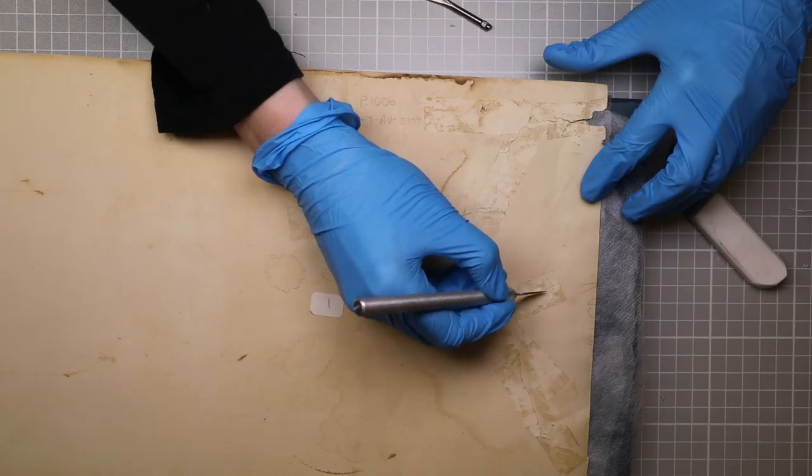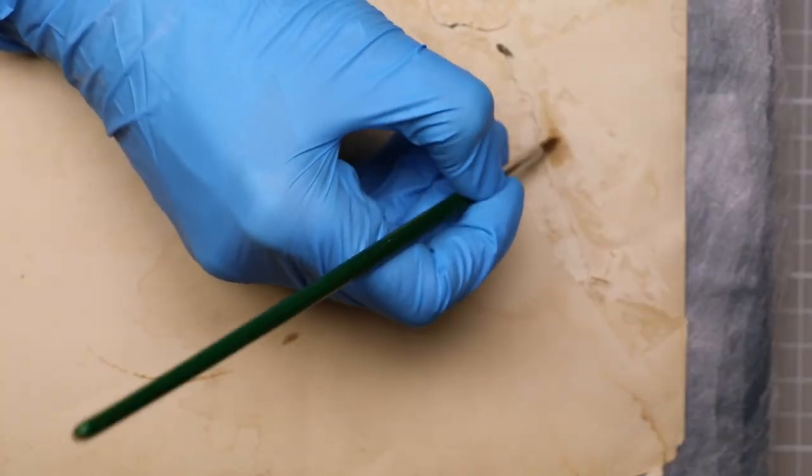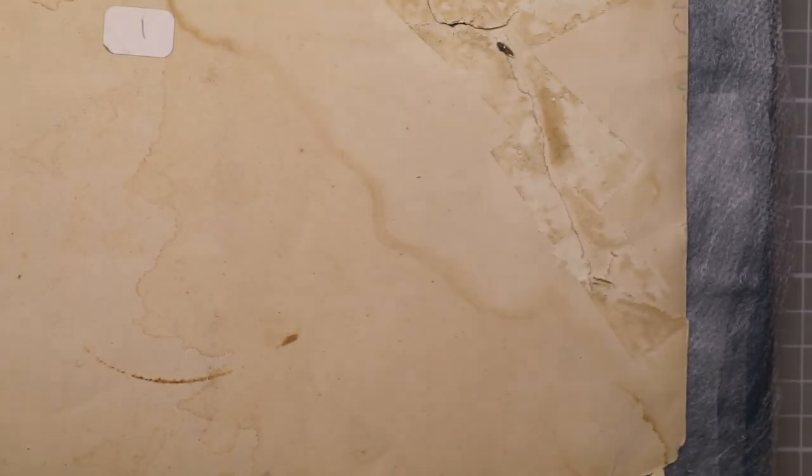Now that the backing is gone, we can use a vinyl eraser, a scalpel, and a tiny paintbrush with a tiny amount of alcohol to scrape off as much of the remaining adhesive as we can.